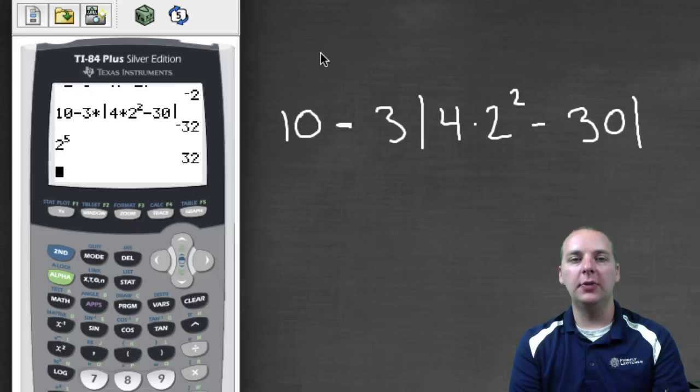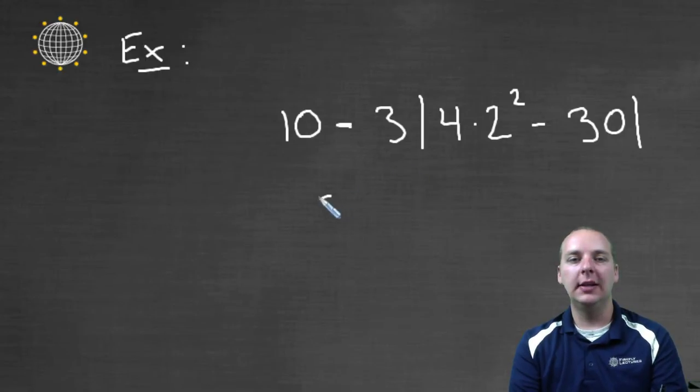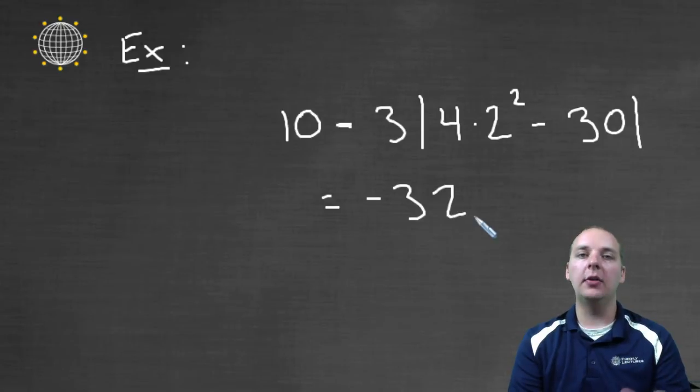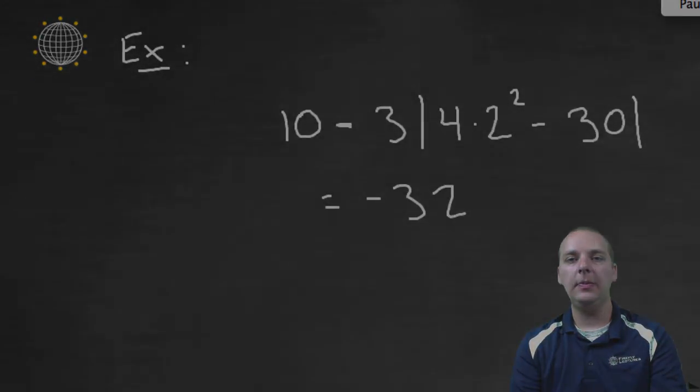Okay, so our answer for this previous problem though, was negative thirty-two. So play around with your calculator, it can be a great tool, and again it's very nice that it has encoded into it already the order of operations.